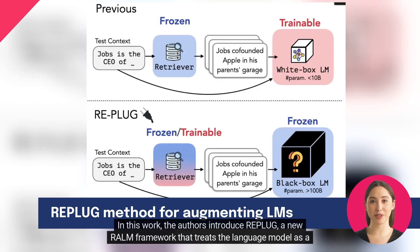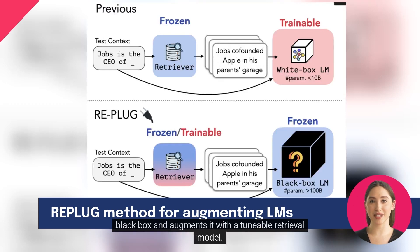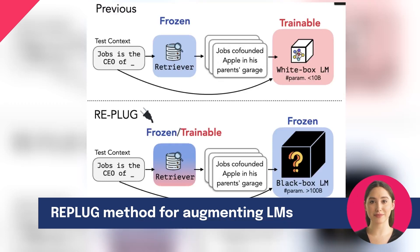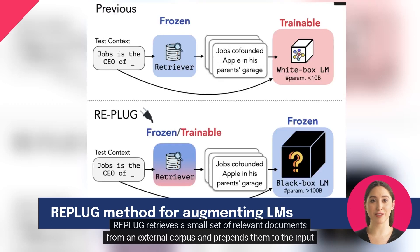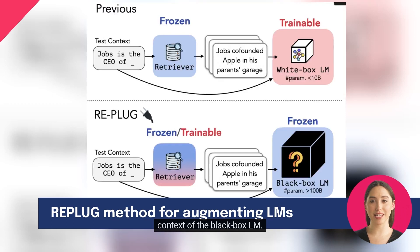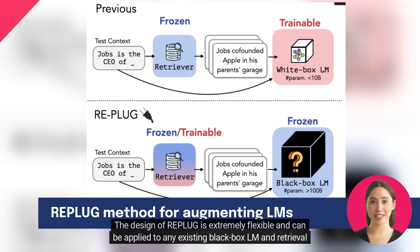In this work, the authors introduce Replug, a new RALM framework that treats the language model as a black box and augments it with a tunable retrieval model. Replug retrieves a small set of relevant documents from an external corpus and prepends them to the input context of the black box LLM. The design of Replug is extremely flexible and can be applied to any existing black box LLM and retrieval model.